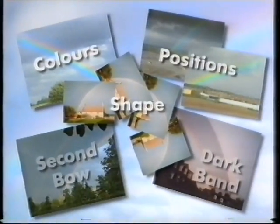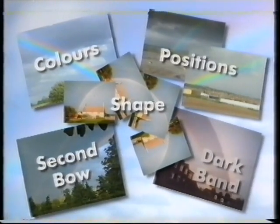Now, what about the secondary bow? How does the light for that come about? Well, not all the light leaves a raindrop after a single reflection. A little light is reflected a second time before escaping.